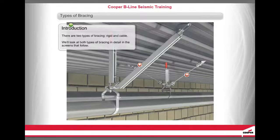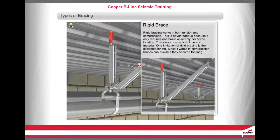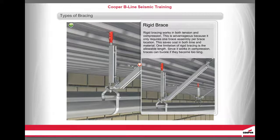There are two types of bracing: rigid and cable. Rigid bracing works in both tension and compression, which is advantageous because it only requires one brace assembly per brace location, saving cost in both time and material. One limitation of rigid bracing is the allowable length — since it works in compression, braces can buckle if they become too long.